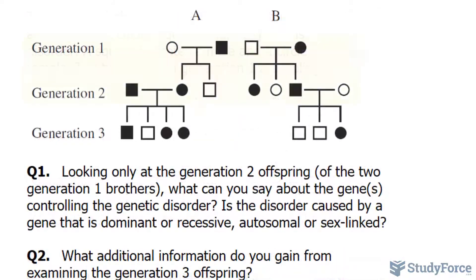In question number 1, look only at the generation 2 offspring of the two generation 1 brothers. What can you say about the genes controlling the genetic disorder? Is the disorder caused by a gene that is dominant or recessive, autosomal or sex-linked?